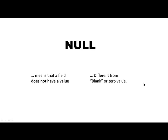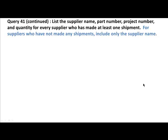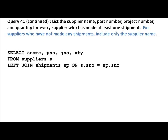You are going to see null quite often, so you need to understand what null is. Now we continue — the supplier problem: supply number, part number, project number, quantity for every supplier who made at least one shipment. For suppliers who have not made any shipments, include only the supplier name. And we saw this query.